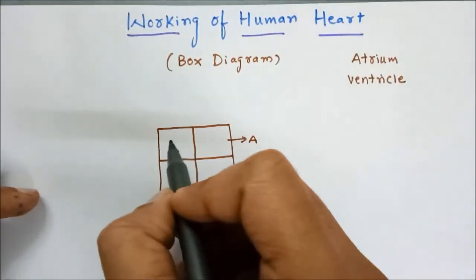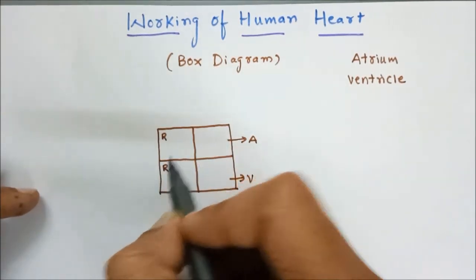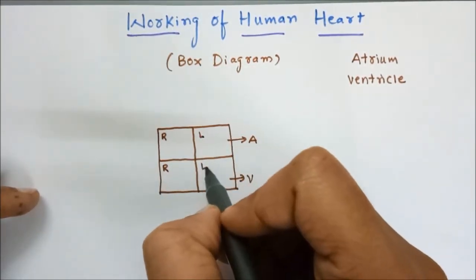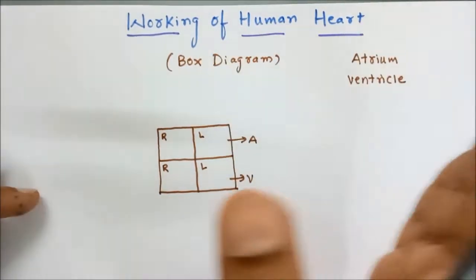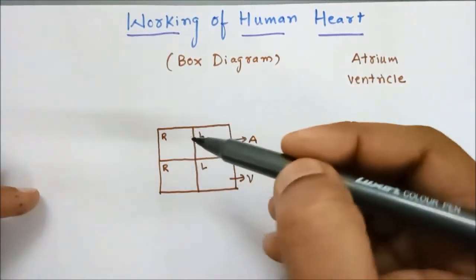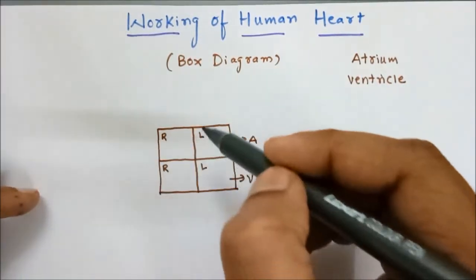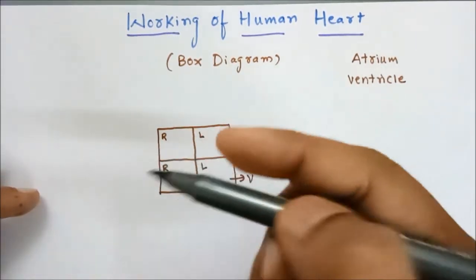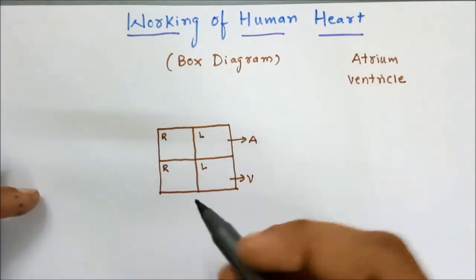Now this is the right side and this is the left side. From the viewer's perspective this appears to be the right, but you have to imagine that you are lying down facing the camera — then your right side would be in this direction.